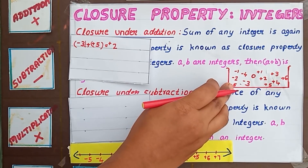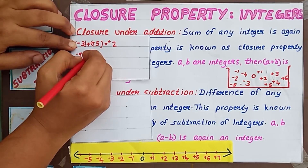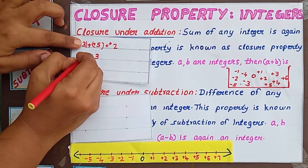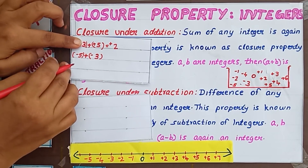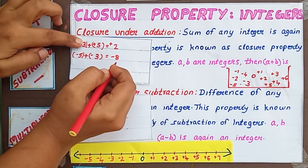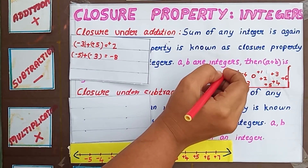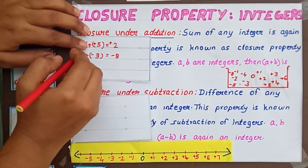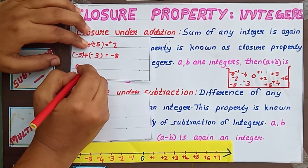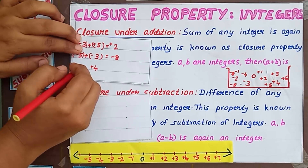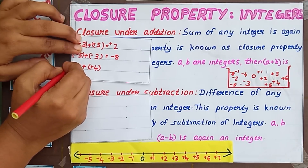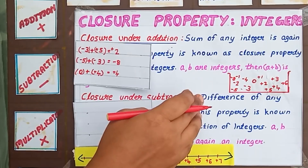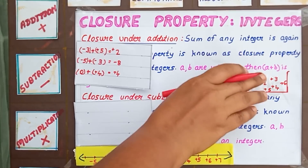Take any other numbers: -5 and -3. We are doing closure under addition, so the operation should be addition. -5 + (-3) = -8. We can include -8 inside this basket because -8 is again an integer, so the answer is here. Take one more: 0 and +4. 0 + 4 = +4, and you can see the answer in this basket. Take any numbers from the set, find the sum, and the answer will also be in this set.